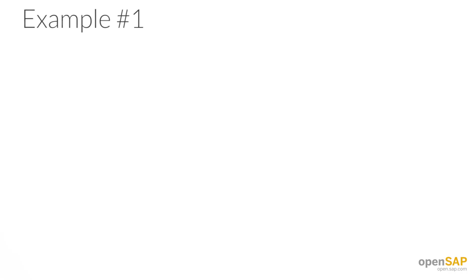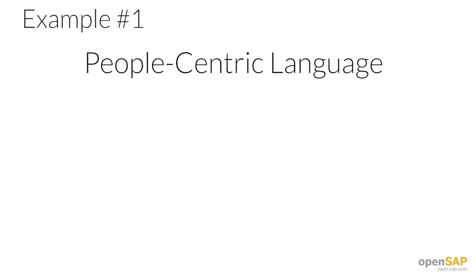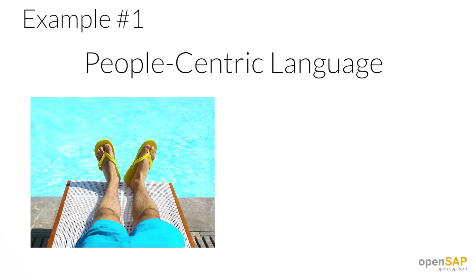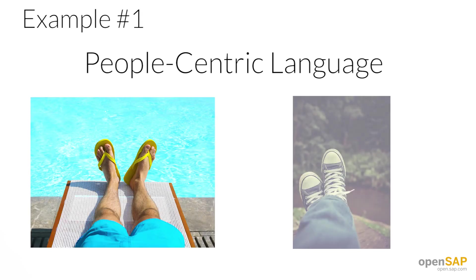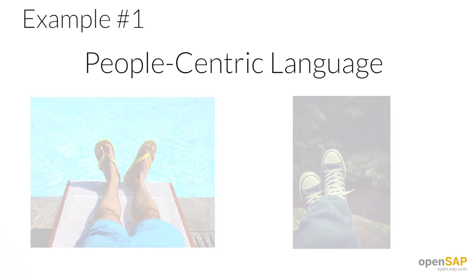First up, here's an example about people-centric language. Because people-centric language can be very subjective — what's casual to me might be too casual to you — it's important to think about your audience and the degrees of user-friendliness. Here's one example written for different types of readers.